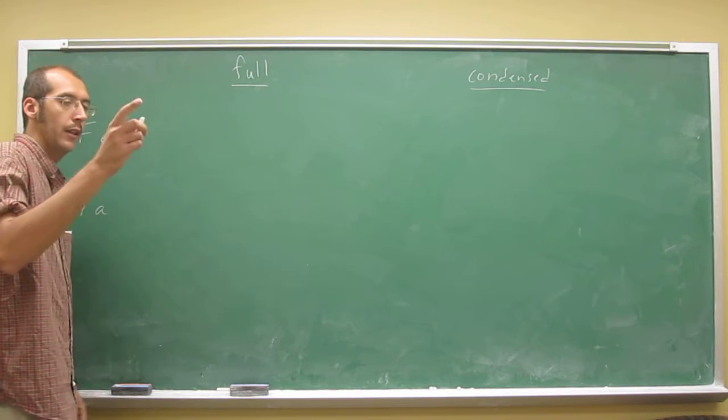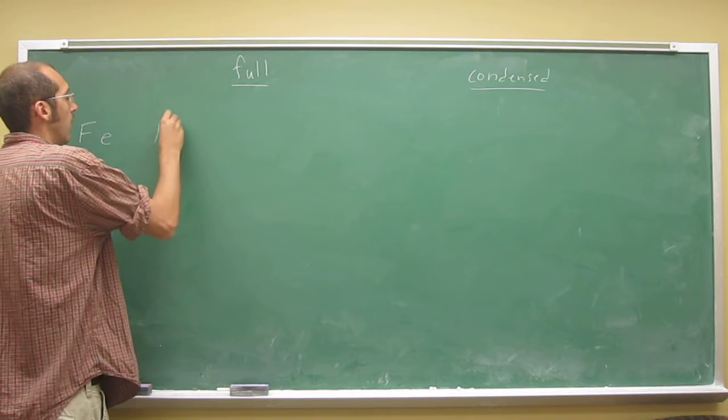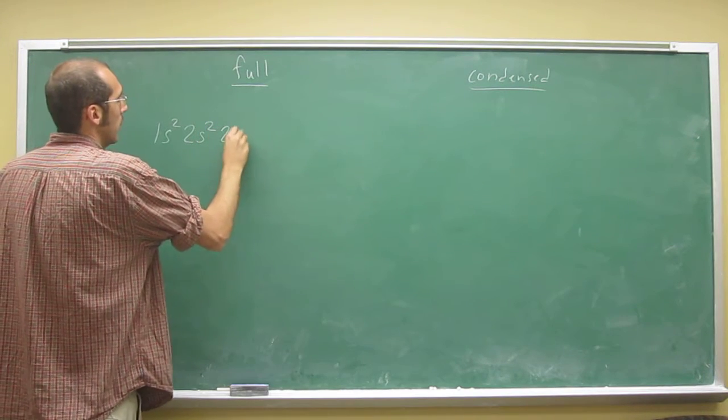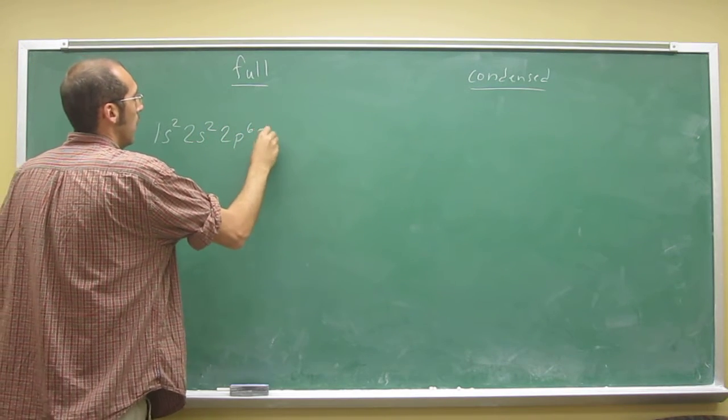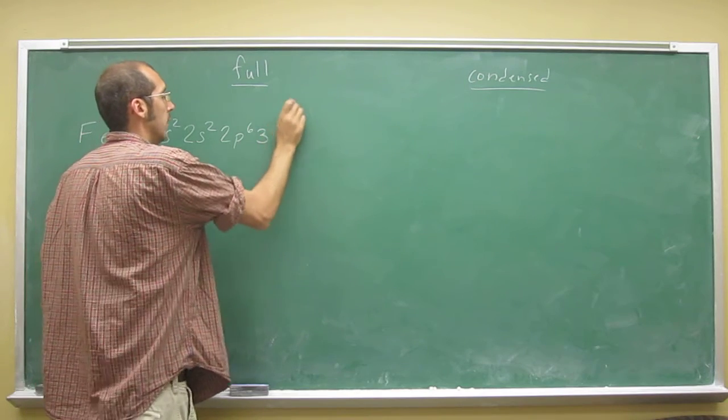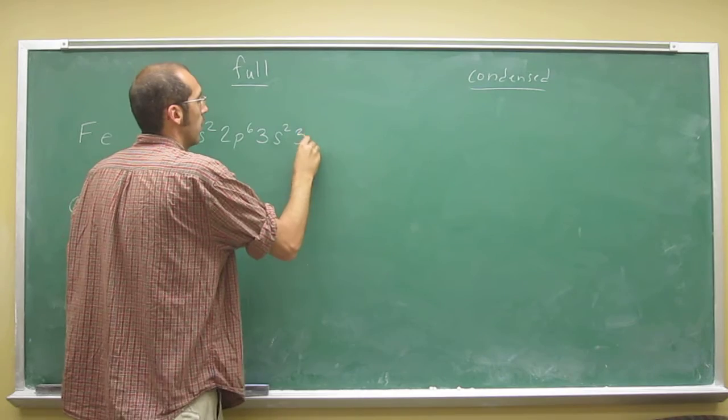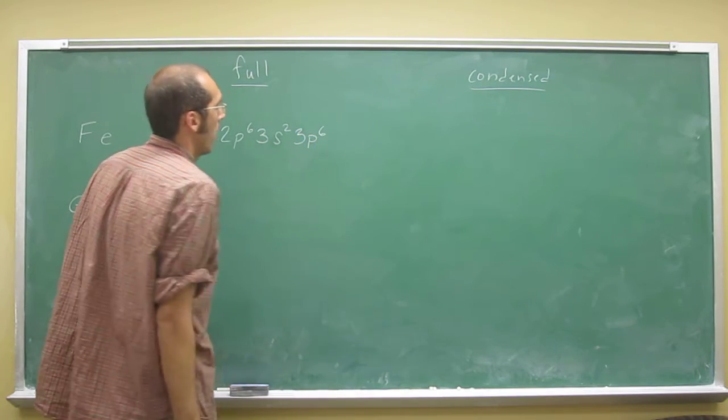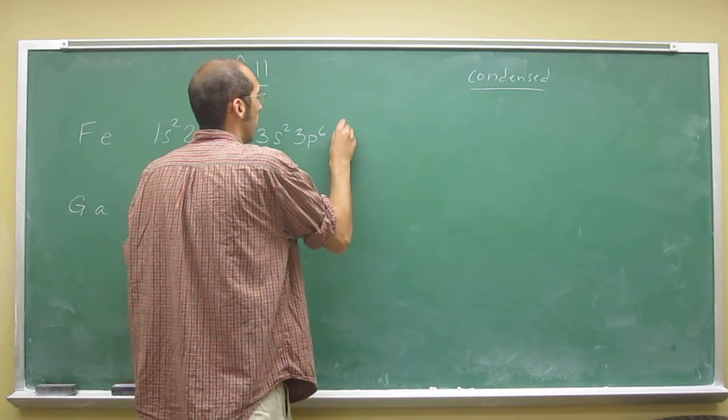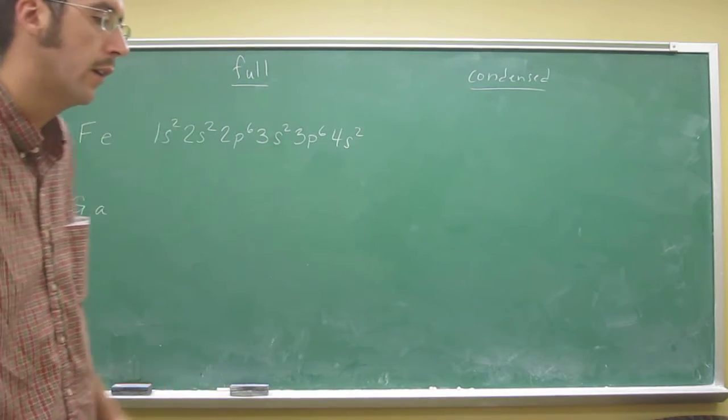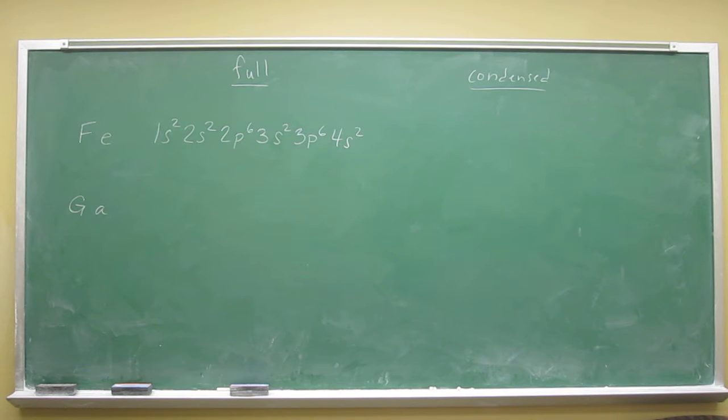So again, look at the periodic table. 1s2, 2s2, 2p6, 3s2, 3p6, 4s2. So those are all the ones that we've done so far, all the way up to calcium, 20 electrons.